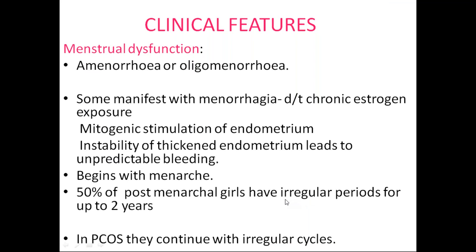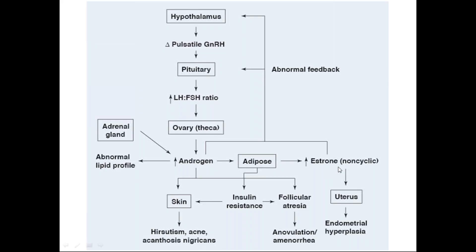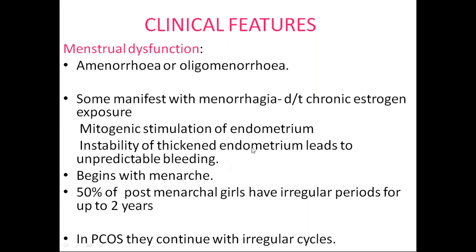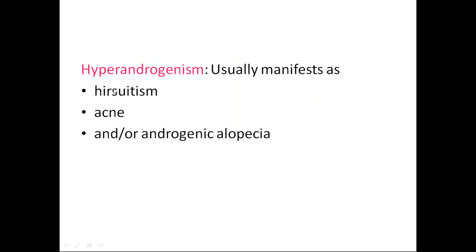The clinical features of PCOS: menstrual dysfunction is the most common. It may present as amenorrhea or oligomenorrhea, but some patients manifest with menorrhagia after a prolonged period of amenorrhea, due to chronic estrogen exposure stimulating and then destabilizing the endometrium. It may begin at menarche. Notably, 50% of postmenarchal girls have irregular periods for up to two years due to immaturity of the HPO axis, so PCOS cannot be diagnosed within those two years. In PCOS, irregular cycles continue beyond two years.